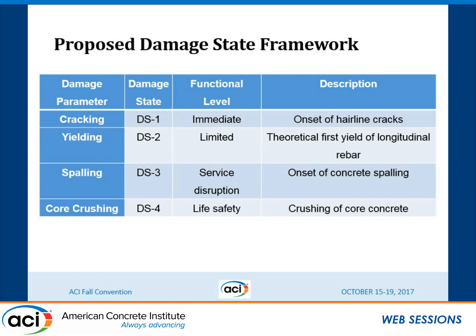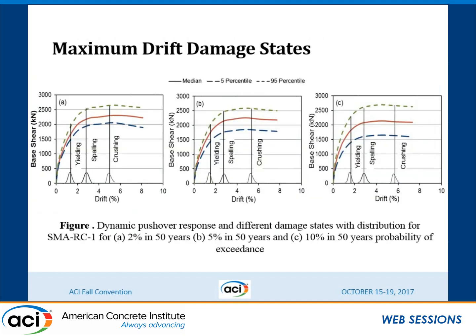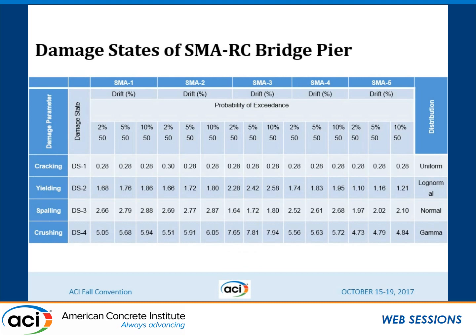Damage states were defined in terms of cracking of concrete, yielding of reinforcement, spalling of concrete, and core crushing — all defined in terms of strain level. During the dynamic time history analysis, we observe when each strain level is reached. We then develop the pushover response curve, and for each damage state strain and hazard level, we gather the drift data, follow the distribution pattern, and find the median — that defines the damage state for each hazard level. Considering all analyses, we then define different limit states for each SMA type.